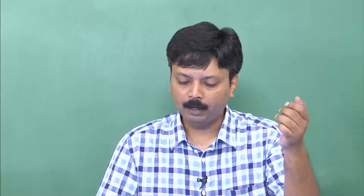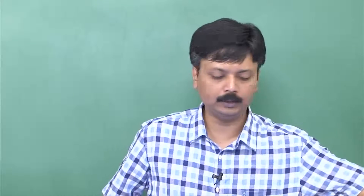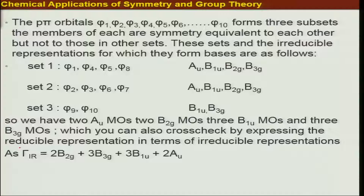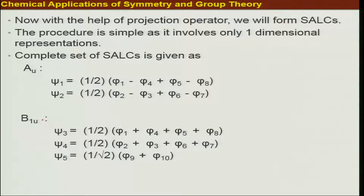Individually we formed the representations using basis sets 1, 2, and 3, and ultimately reduced them to get the irreducible representations. Either way — from the three separate representations reduced individually, or from all 10 pi orbitals forming a 10-dimensional representation and then reducing it — the result is ultimately the same. After doing that, you use the projection operator for each individual IR and find the SALCs.